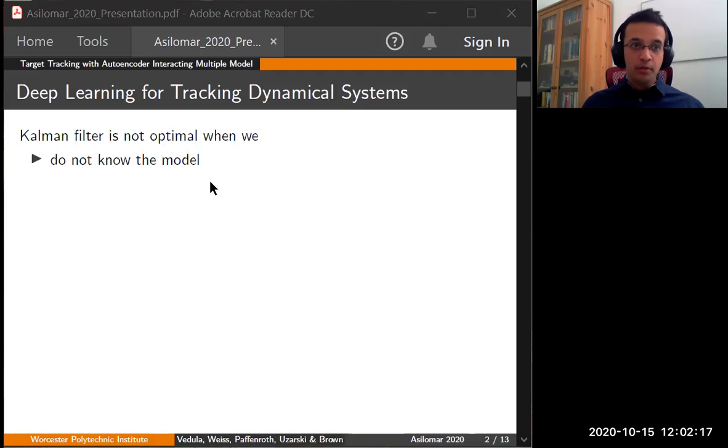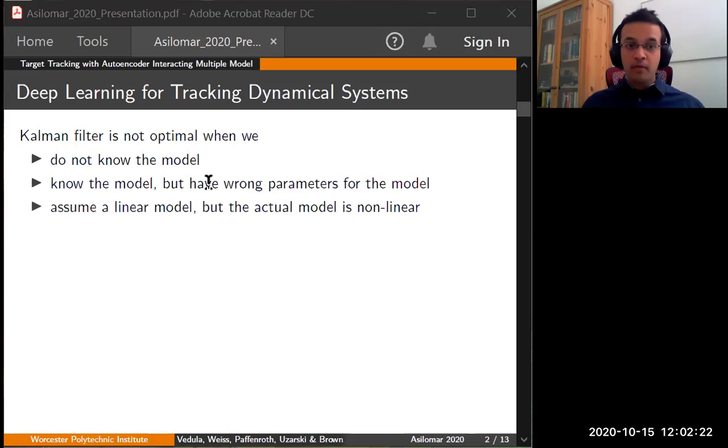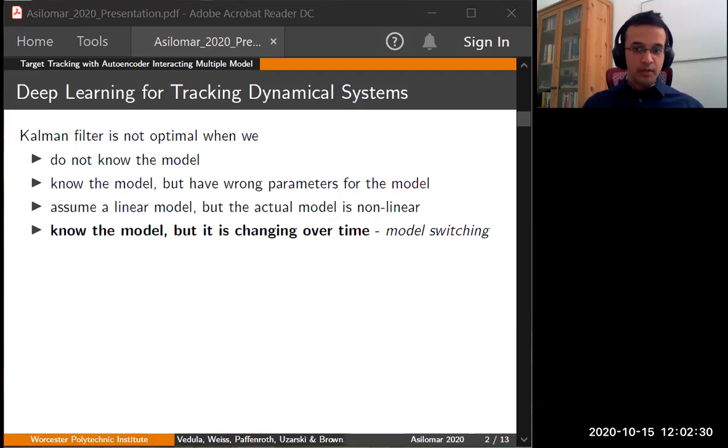We either don't know the model, we know the model but we have the wrong parameters for the model, we assume a linear model but the actual model is nonlinear, and finally when we know the model and it is changing over time. This is called model switching. We consider model switching in this paper.